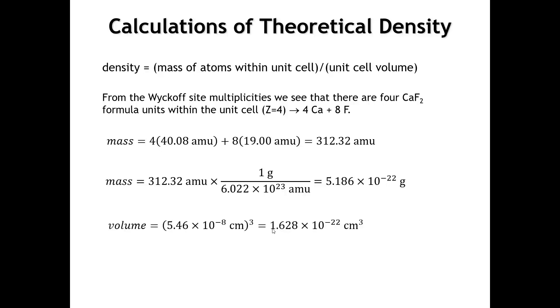The volume of a cube is just the length of the edge cubed. So, here, the edge length is 5.46 angstroms, and that's 5.46 times 10 to the minus 8 centimeters. If we cube that, we get this number here for the volume. And then, finally, we can calculate the density by dividing the mass by the volume, and we end up with 3.19 grams per centimeter cubed.